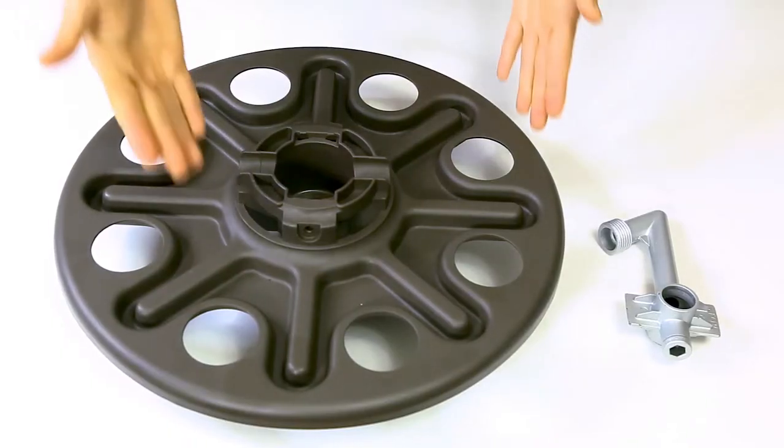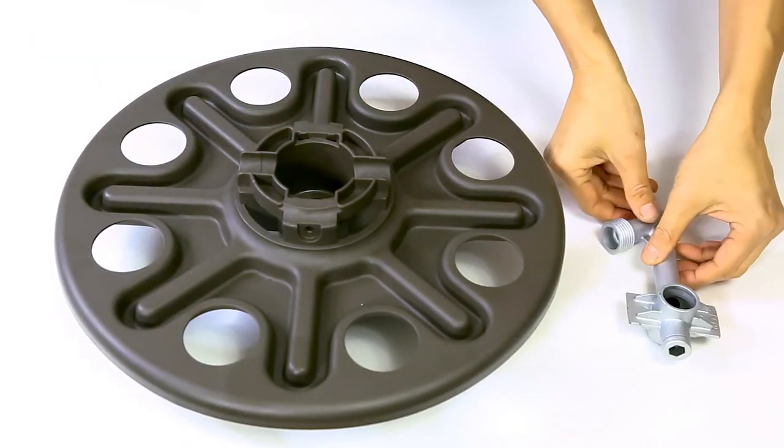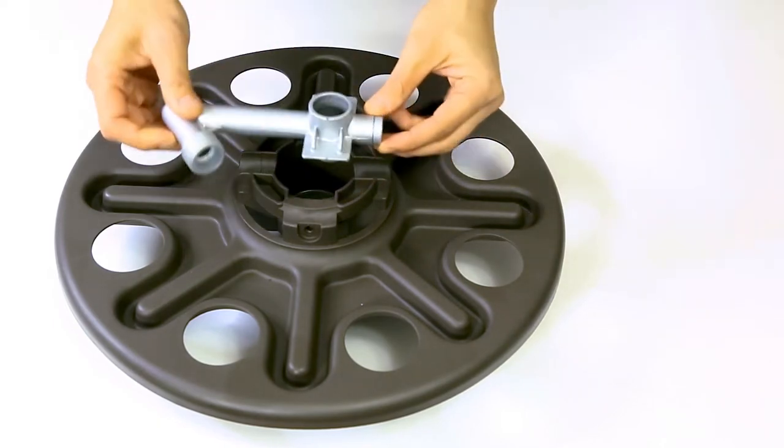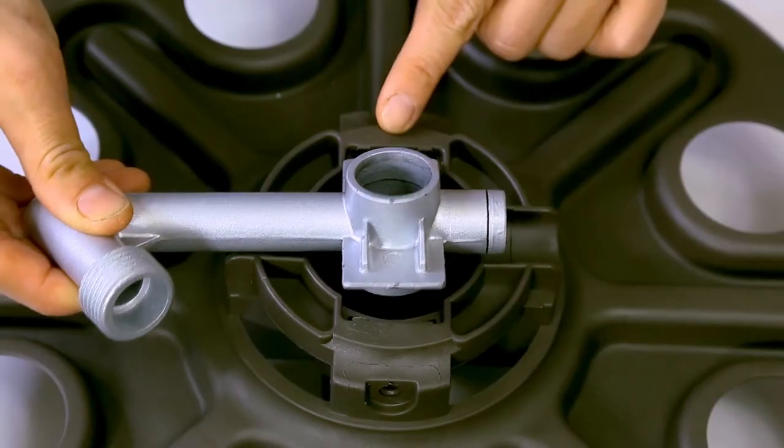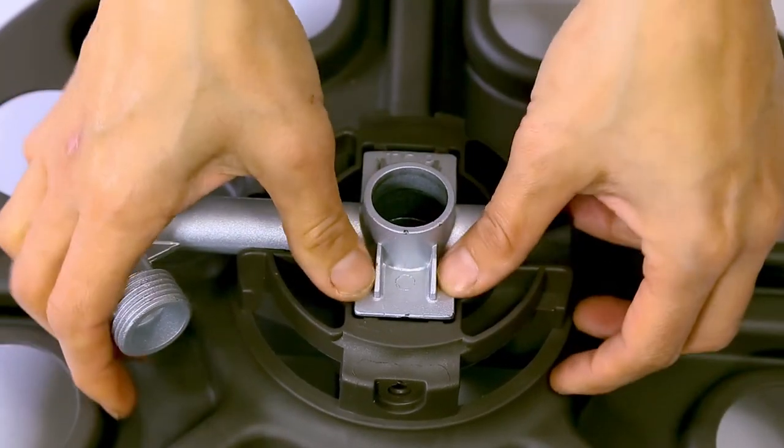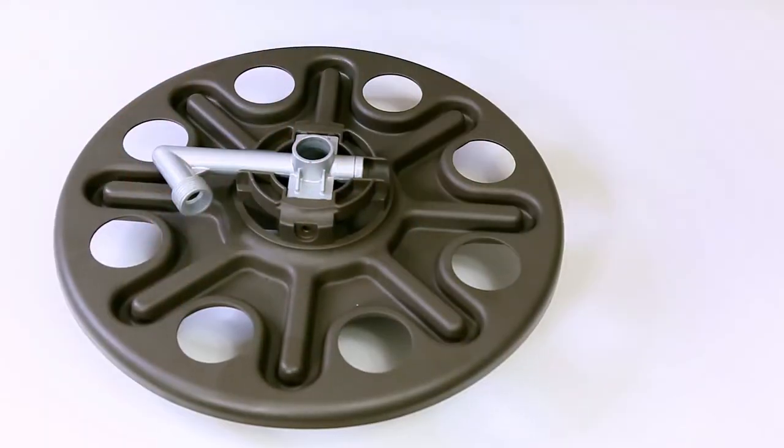Let's begin with the reel assembly. Start with any one of the reels and the exit tube. With the exit tube facing down, align the edge under the snaps. Then press down to snap the tube into place.